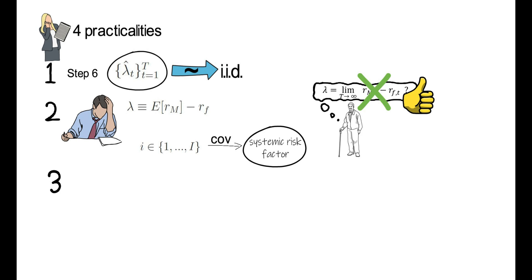Now third, as an absolute minimum, in step 4, you should use at least, but really at least, 10 observations in the cross-section for each regression.